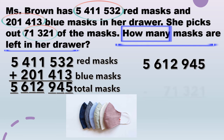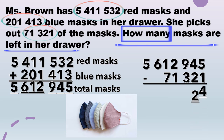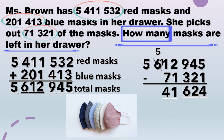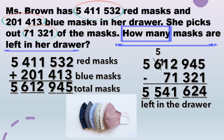Now we subtract: 5,612,945 take away 71,321. 1 from 5 ones leaves 4 ones; 2 tens from 4 tens leaves 2 tens; 3 hundreds from 9 hundreds leaves 6 hundreds; 1,000 from 2,000 leaves 1,000. 7 ten-thousands from 1 ten-thousand cannot work, so we rename 600,000 as 500,000 and now have 11 ten-thousands. 7 ten-thousands from 11 ten-thousands is 4 ten-thousands. Bring down 500,000 and 5,000,000. Left in her drawer she has 5,541,624.